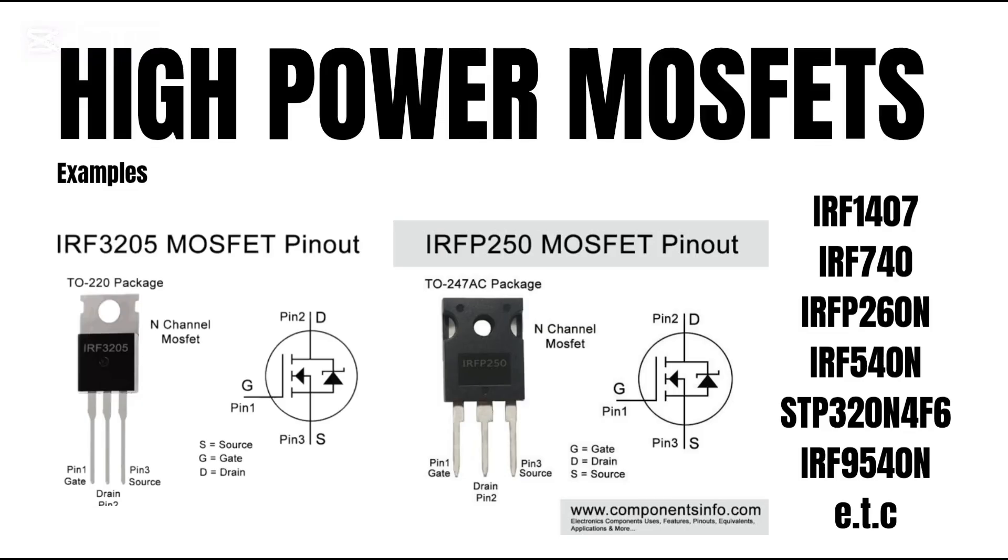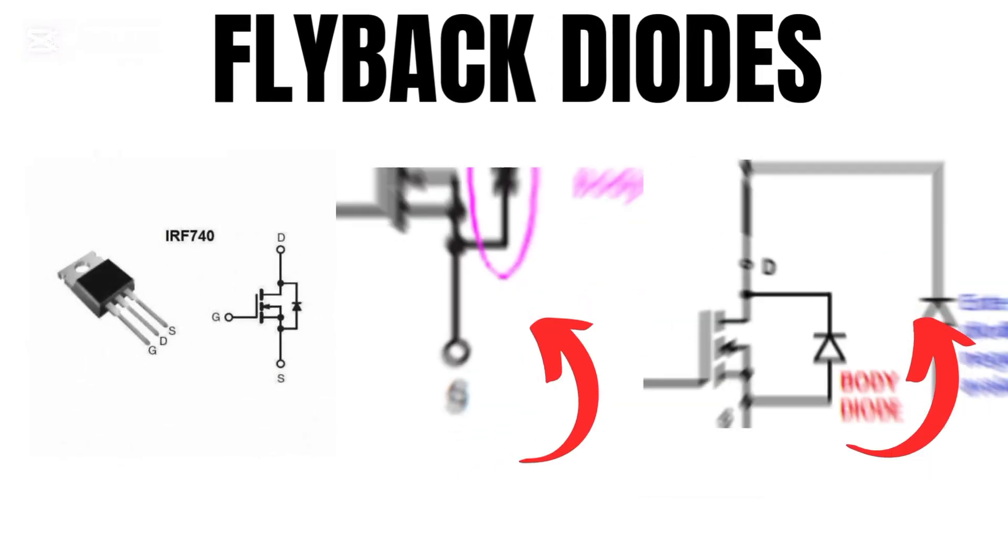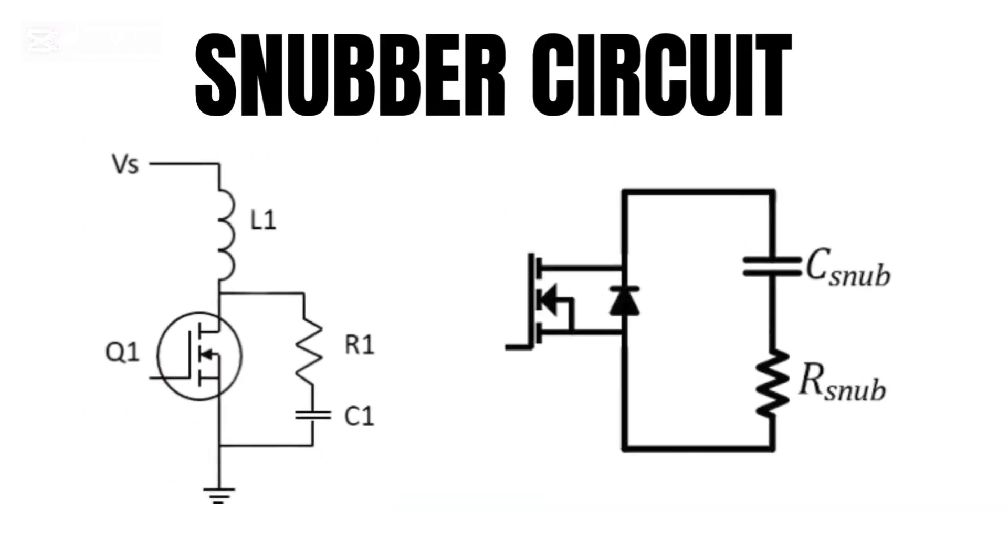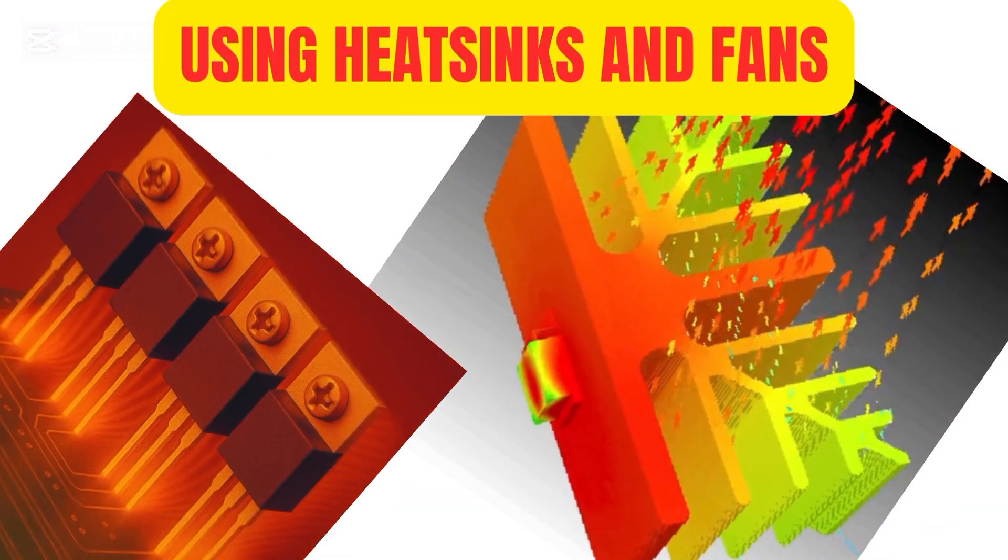High-power MOSFETs require protection circuits. Fly-back diodes prevent voltage spikes, snubber circuits reduce transients, and proper heat management extends their lifespan.